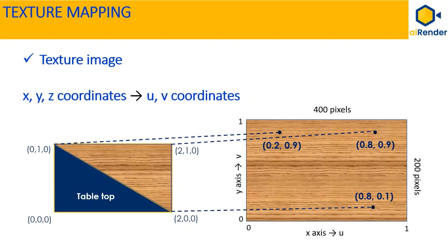For example, the top-right corner vertex with x-y-axis coordinates 2, 1, 0 are mapped to a pixel location with u-coordinates 0.8 and 0.9 in the texture image, and the corresponding RGB value of that pixel is mapped as the color of that vertex. Similarly, other vertices of the triangle can be mapped to different UV coordinates in the texture image as shown here.